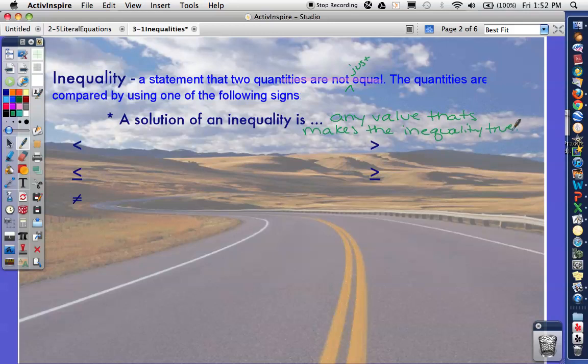So we should be pretty familiar with these signs. Remember, you're always reading from left to right. Less than is opening towards the right. And if there's a bar under it, that means less than or equal to. This would be not equal. And then, of course, we have greater than or greater than or equal to.